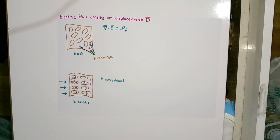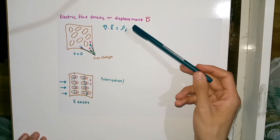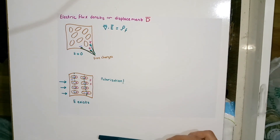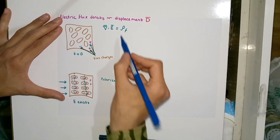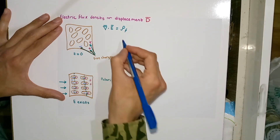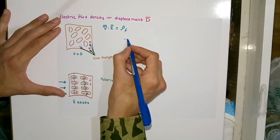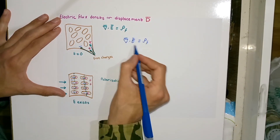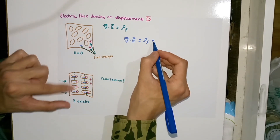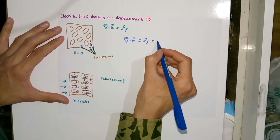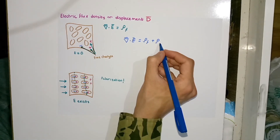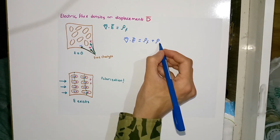The total electric field generated by this dielectric is now going to change under the effect of the external electric field. To this divergence equation I am going to add the polarization charge density, which I represent as ρ_P, where P denotes polarization.